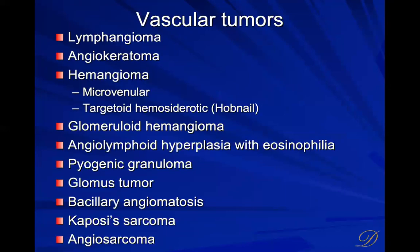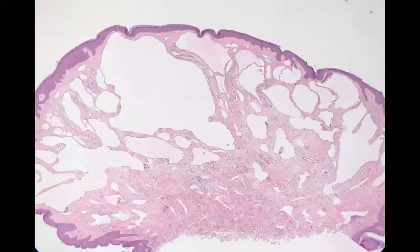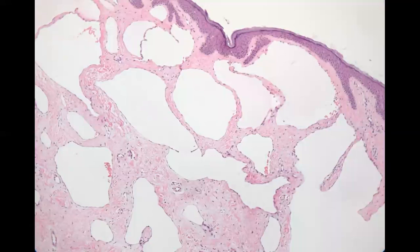Moving on to vascular tumors. Vascular includes lymphatic vessels and blood vessels. We have several subcategories: angiolymphoid hyperplasia with eosinophilia, pyogenic granuloma, glomus tumors, infectious things, and cancer. Lymphangiomas are dilated vascular spaces filled with lymph. They rise up fairly superficially to the epidermis, which is why you often see that frog spawn look of little clear vesicles under the skin, filled almost entirely with lymphatic fluid.